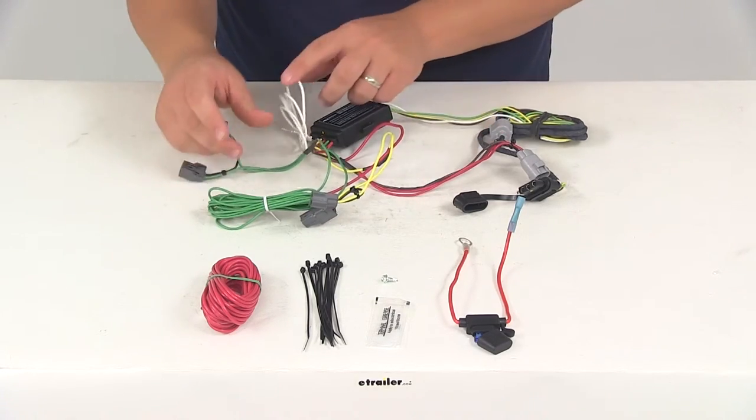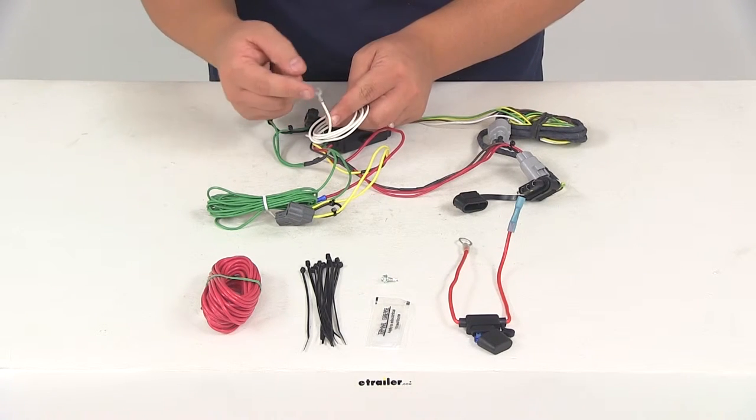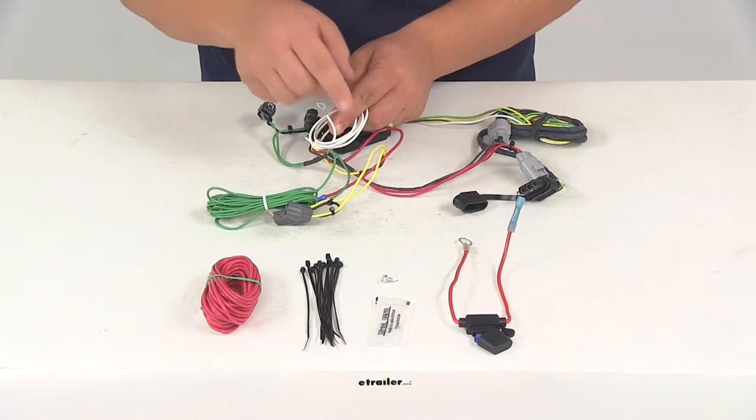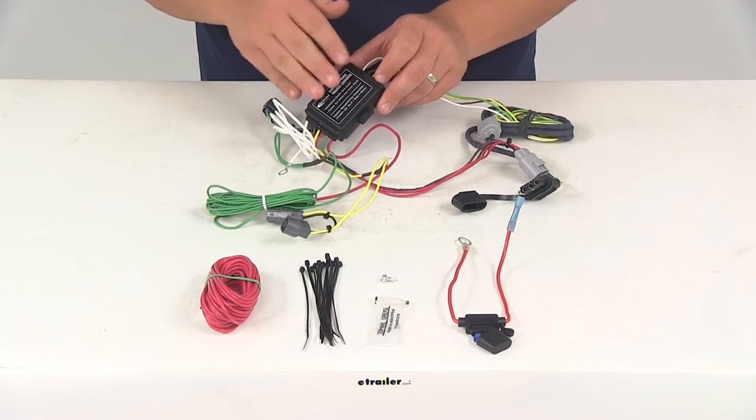Once you have those connected, you'll need to make your ground connection. Again, that's going to be your white wire. It's got the ring terminal on there. You want to ground that to a nice, clean metal surface using the included self-tapping screw, and then you can mount your tail light converter.